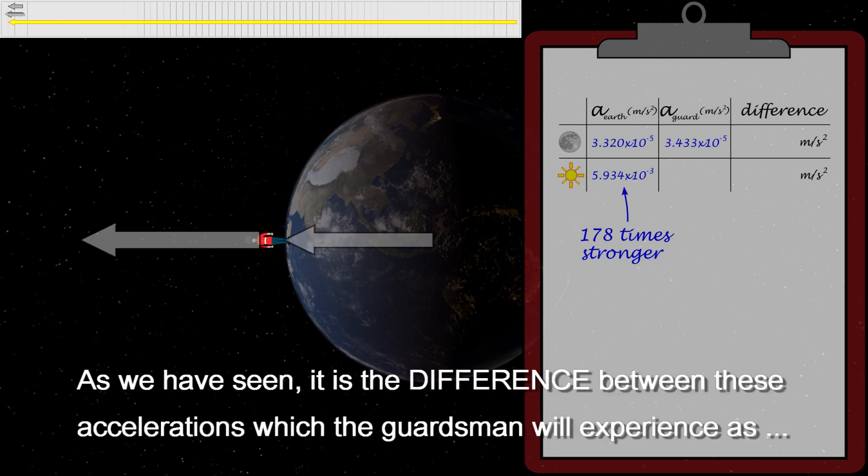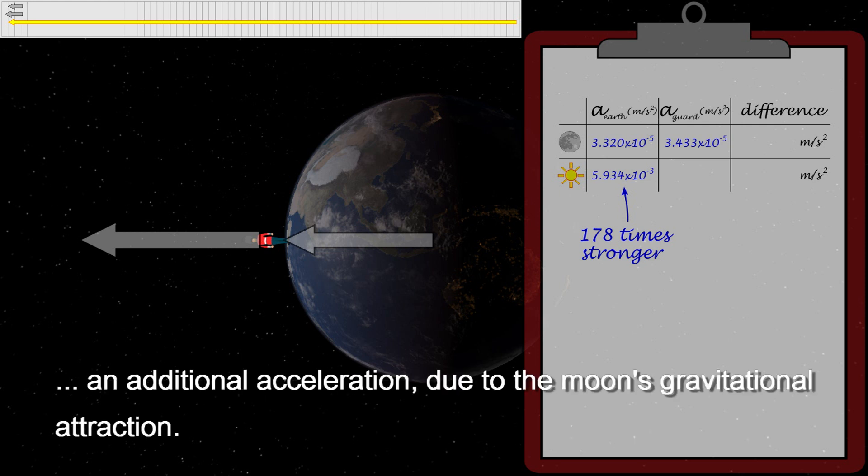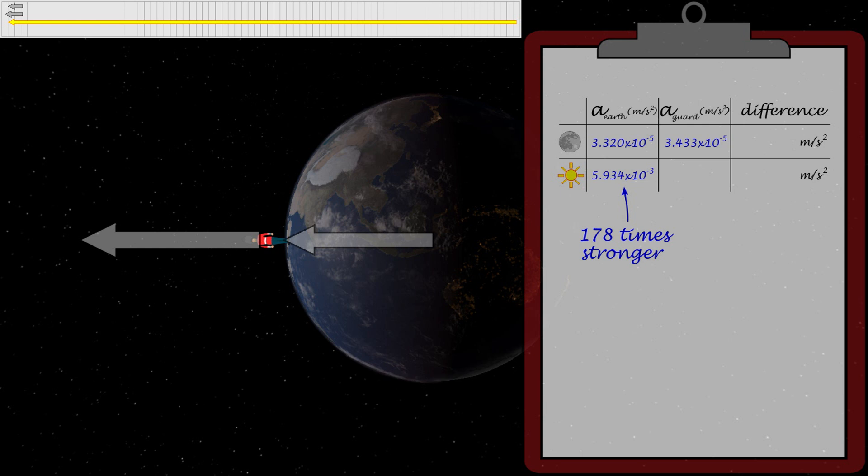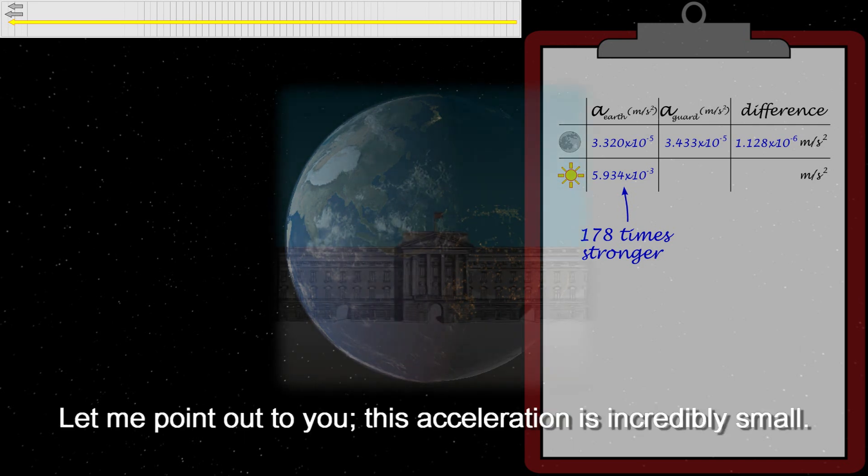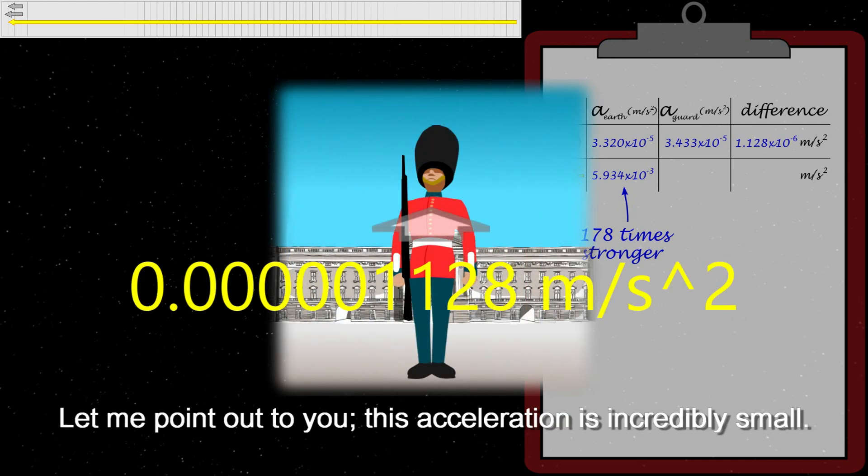As we have seen, it is the difference between these accelerations which the Guardsman will experience as an additional acceleration due to the Moon's gravitational attraction. This difference is 1.128×10^-6 meters per second squared. Let me point out to you, this acceleration is incredibly small.